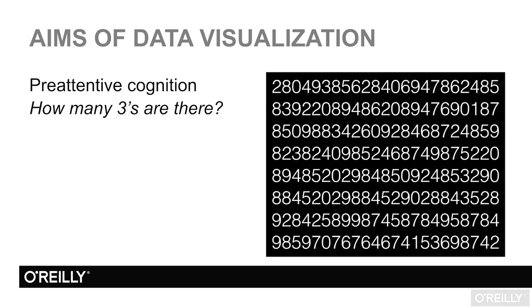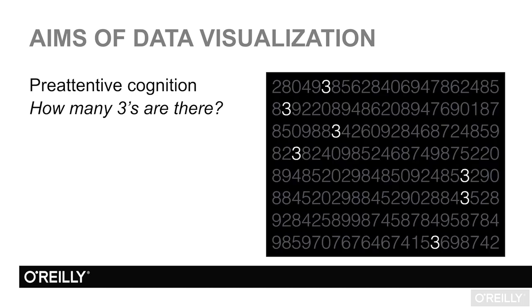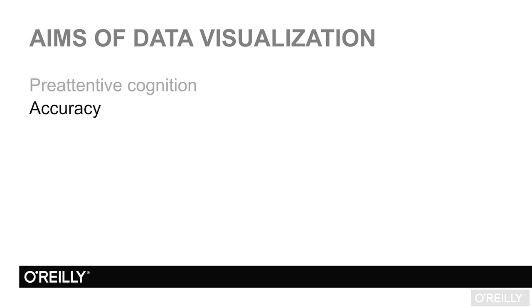For example, if I asked you how many threes are there in the string of numbers, you would have to manually go through reading the numbers, and this would be an error-prone process as well as a time-consuming one. However, if we leverage a pre-attentive attribute, such as color that your brain will automatically process, it becomes very simple for your brain to distinguish effortlessly the difference between the threes and the rest of the numbers here. As such, people working in data visualization have sought to maximize instances of using pre-attentive processing.